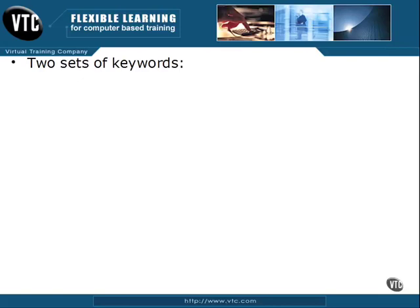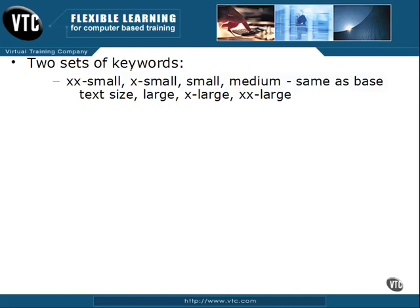We have two sets of keywords that we can use. The first set of keywords has a scale from xx-small to xx-large, with medium being the same as our base text size. So we have xx-small, x-small, small, medium, large, x-large, and xx-large.